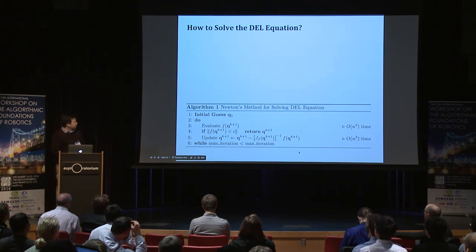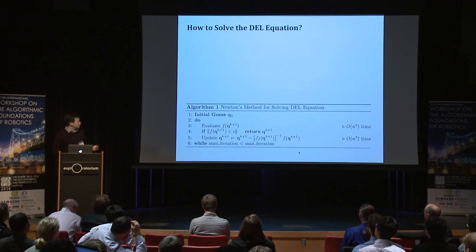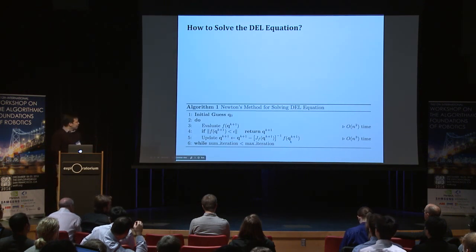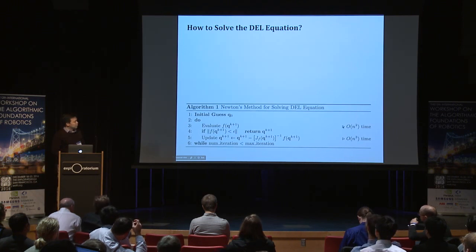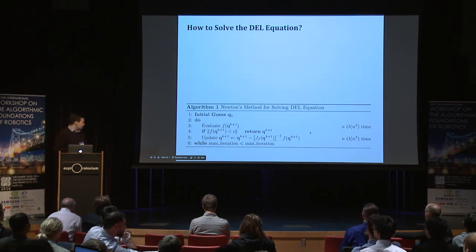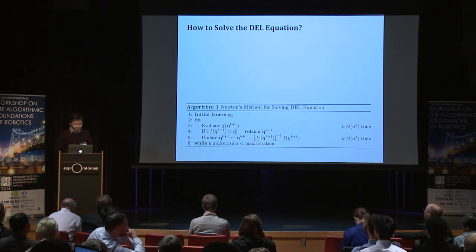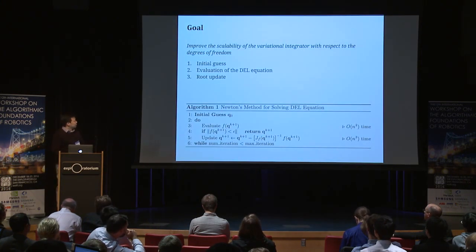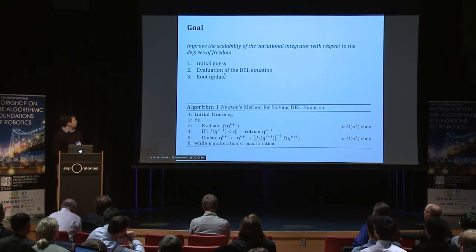We solve the DEL equation using Newton's method, the standard approach for root-finding. I just said evaluating the DEL equation takes O(n²), but in Newton's method we also need to compute its gradient, which is O(n³). Furthermore, we have to do a matrix inversion, which is also O(n³). So the goal is to improve the scalability of this algorithm for these three parts.